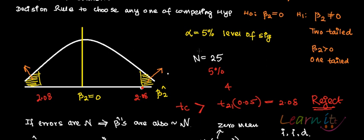Okay, now question is that instead of two-tailed test, if you had one-tailed test, how you would have tested it?